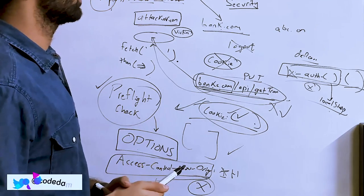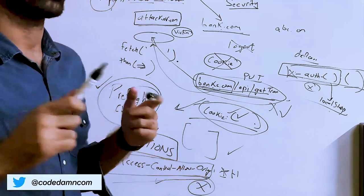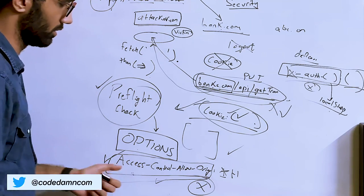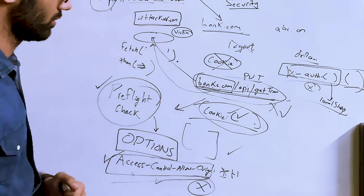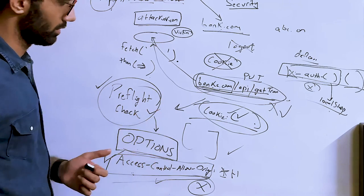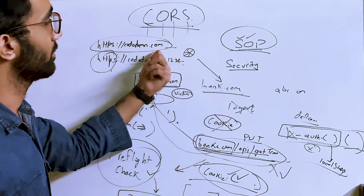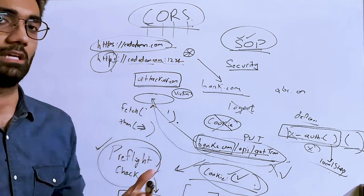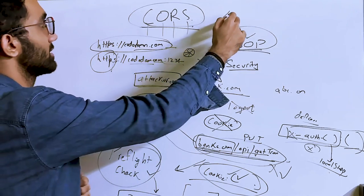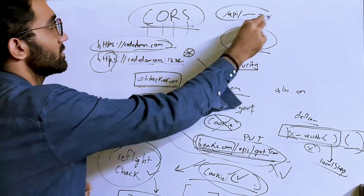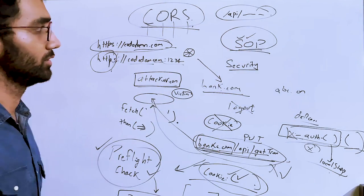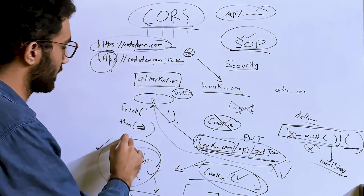By default, if the `Access-Control-Allow-Origin` header is not returned, browsers always block the request as a security measure. The next time you have a CORS error, check whether you are whitelisting your origin, whether your preflight check is successful, and whether you are even doing a cross-origin request at all.